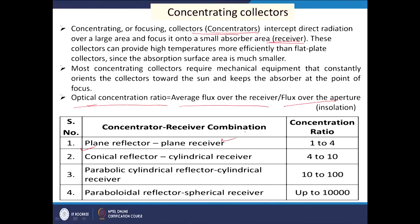For a plane reflector with a plane receiver, the concentration ratio can be 1 to 4. With a conical reflector and cylindrical receiver, it can be 4 to 10. With a parabolic cylindrical reflector and cylindrical receiver, it can be 10 to 100. And with a paraboloidal reflector and spherical receiver, up to 10,000 — that is the maximum concentration achievable.